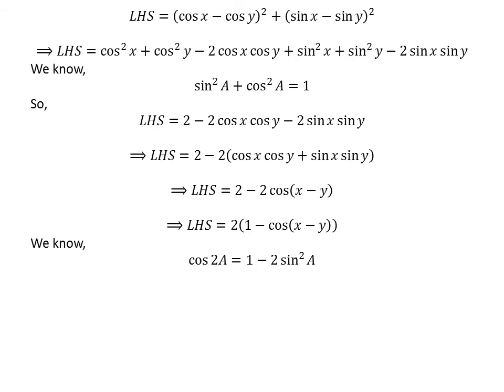We know the identity: cosine of 2a equals 1 minus 2 times square of sine of a. The proof of this identity is given in a linked video. Applying this identity, the left hand side equals 2 times (1 minus 1 plus 2 times square of sine of x minus y upon 2).